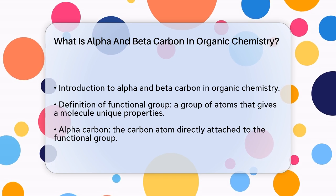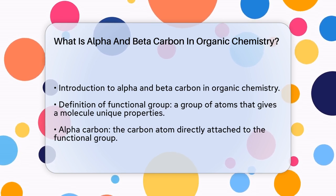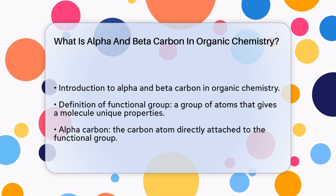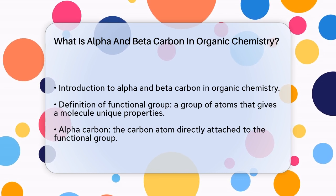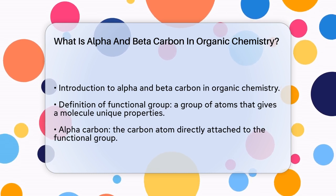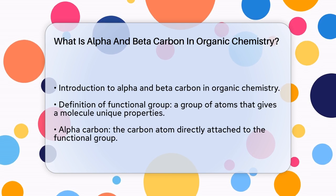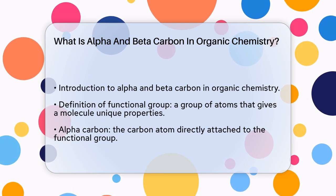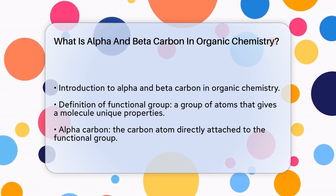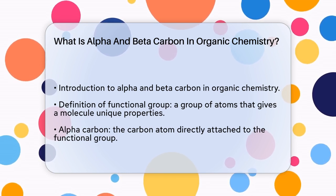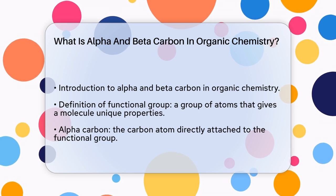In organic chemistry, the terms alpha and beta carbon are used to identify specific carbon atoms in relation to a functional group. What is a functional group? It's a group of atoms within a molecule that gives the molecule its unique chemical properties.